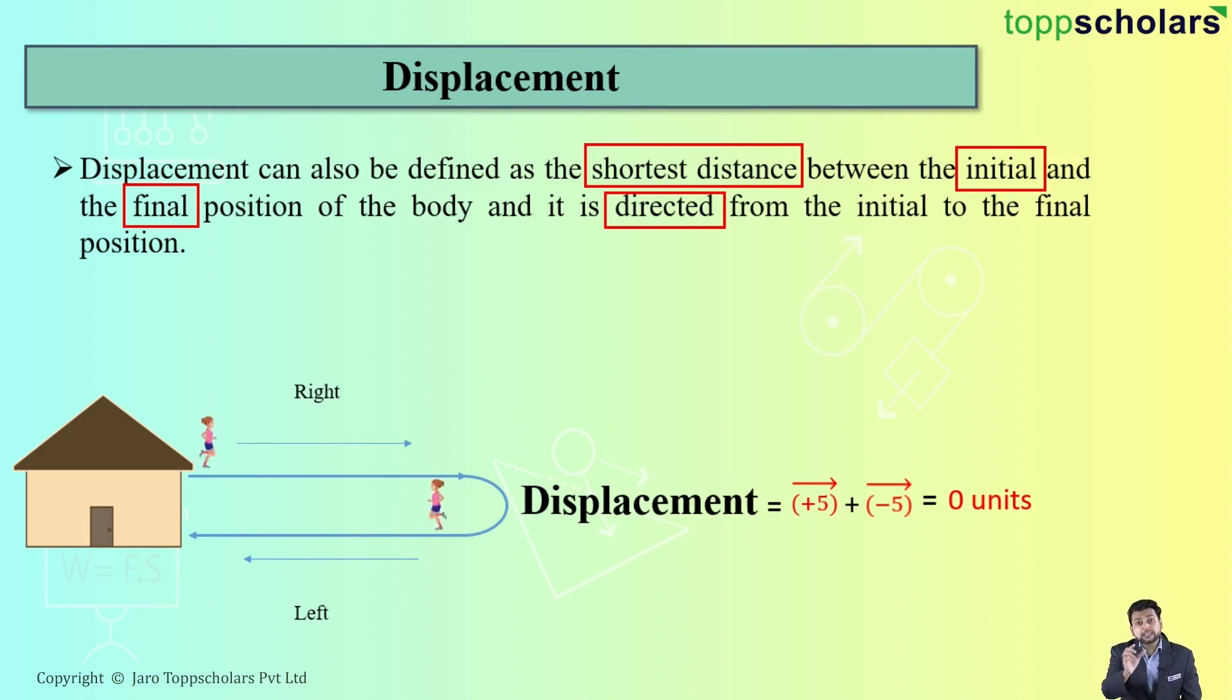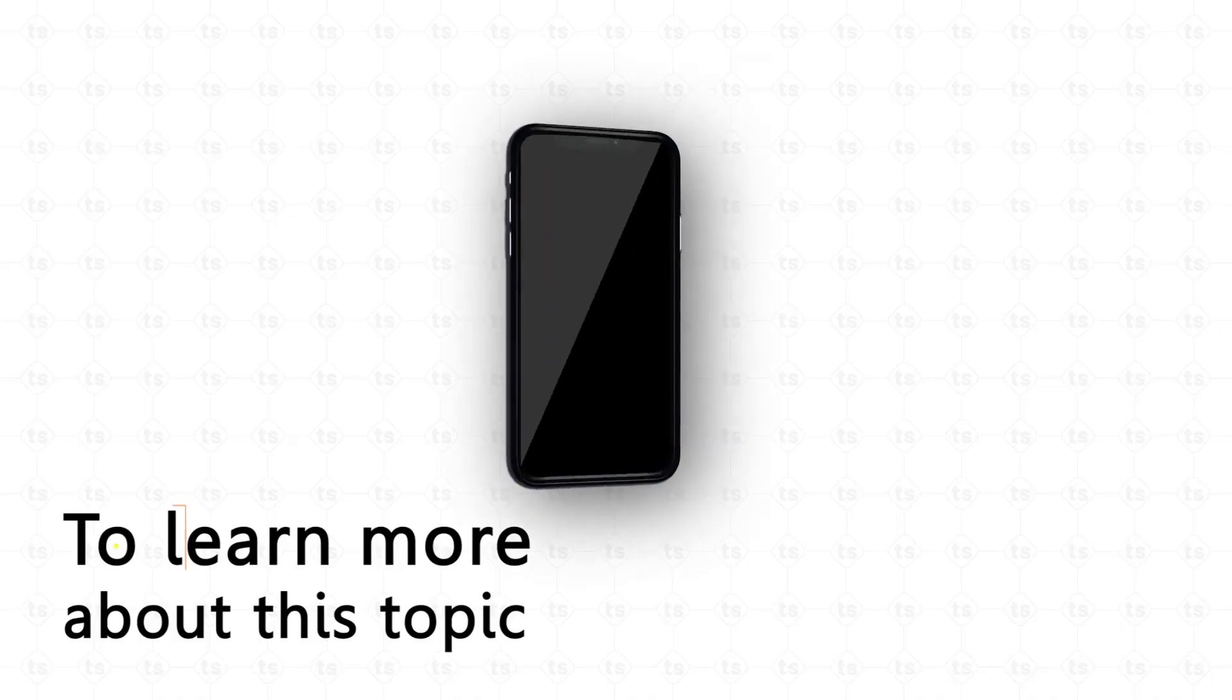What is the final position after the entire tour? Again it is the home. So hence displacement will be zero. So students, what do you observe? That displacement denotes direction and hence it is also called as vector quantity and which is denoted by S.